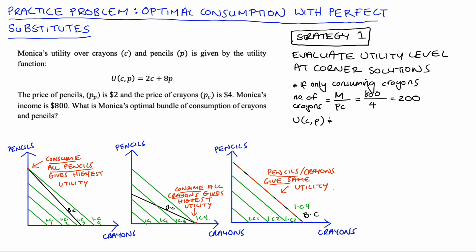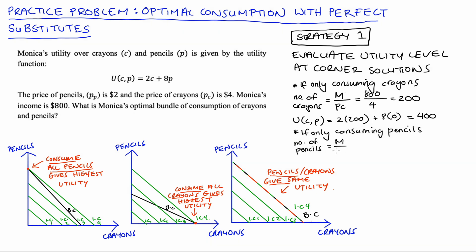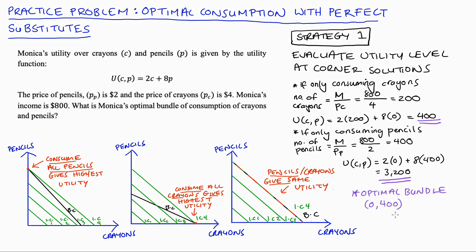Now if Monica spent all of her income on pencils instead, she would purchase 800 divided by 2, which is 400 pencils. Substituting into Monica's utility function: U equals 2 times 0 — no crayons — plus 8 times 400, which equals 3,200. Monica gets a higher level of utility when she consumes only pencils. So we have a corner solution where Monica consumes zero crayons and 400 pencils. That's our answer.